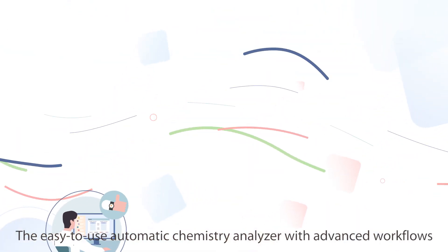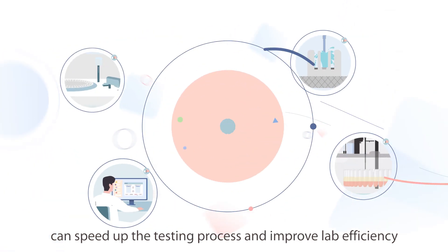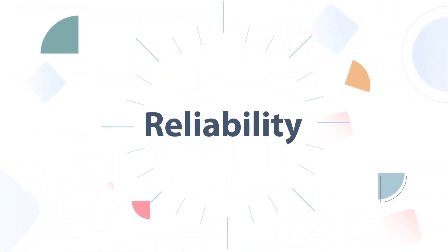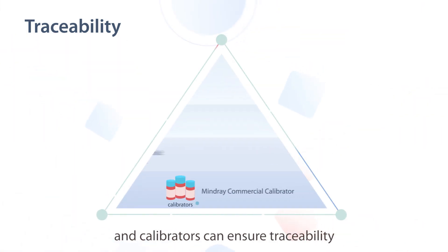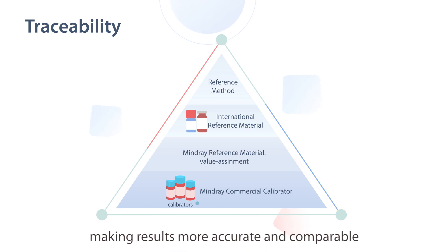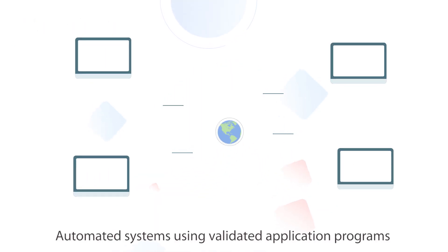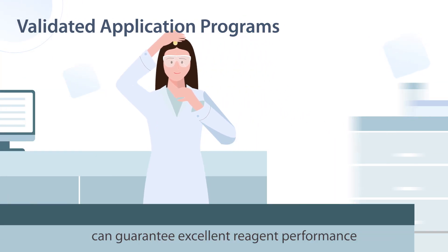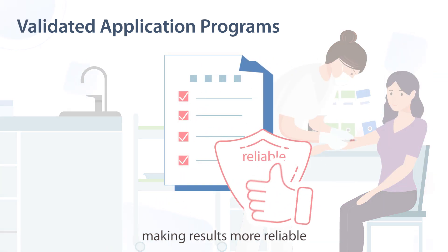The easy-to-use automatic chemistry analyzer with advanced workflows can speed up the testing process and improve lab efficiency. Automated systems using original reagents and calibrators can ensure traceability, making results more accurate and comparable. Automated systems using validated application programs can guarantee excellent reagent performance, making results more reliable.